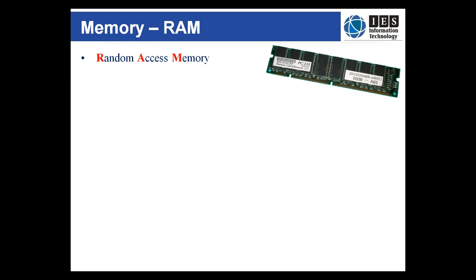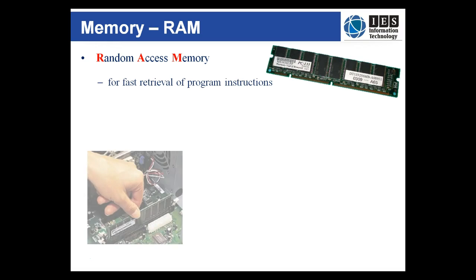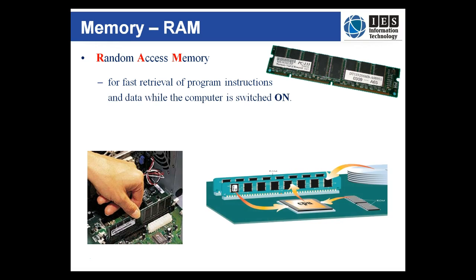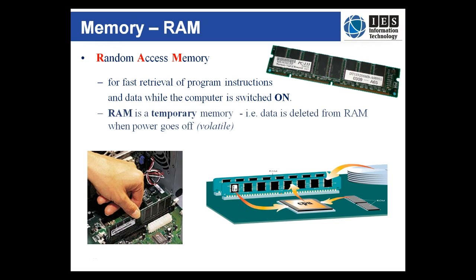The main type of memory inside your computer — the one that is generally referred to as memory — is Random Access Memory or RAM. It is an electronic form of memory, unlike storage devices discussed in Lecture 3. This means that while there is power it's working, but when the power goes off, the data in RAM is lost. This is known as volatile storage.